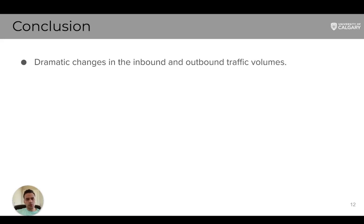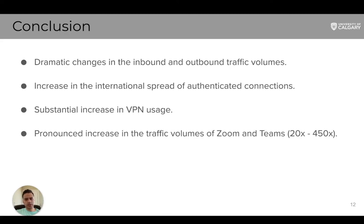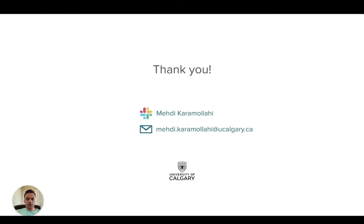To conclude, we saw dramatic changes in inbound and outbound traffic volumes on the campus network, and an increase in the geographical distribution of inbound authenticated connections after the lockdown. Our campus network experienced a substantial increase in VPN usage as the key means of connecting during the pandemic. We saw a significant rise in Zoom and Teams traffic, and provided evidence showing issues with Zoom TCP connections and session management. Please refer to our paper for more information, analysis, and results. We are now ready to answer your questions — you can also send them via email or on Slack. Thank you very much.